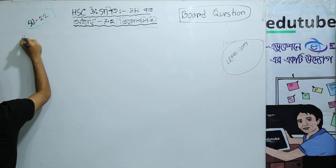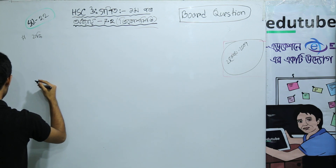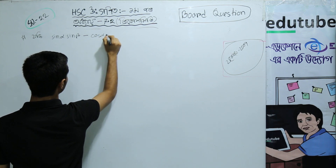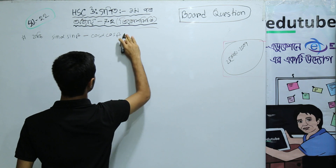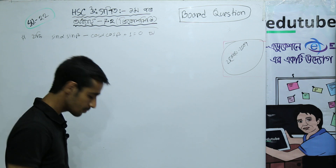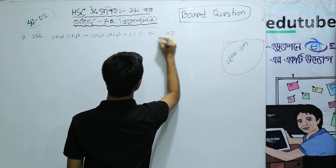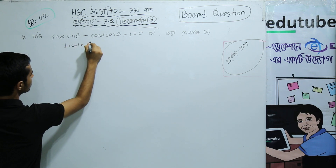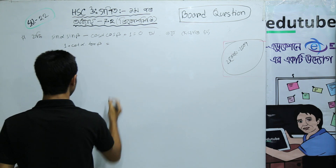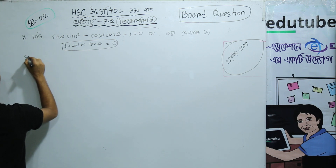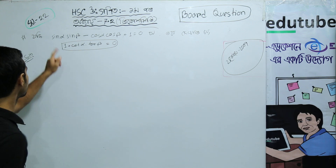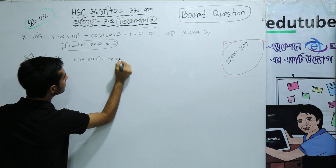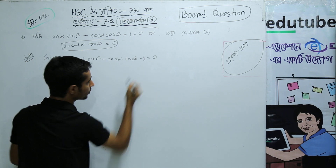Now the second number problem. Given: sin α·sin β minus cos α·cos β plus 1 equals 0. We need to prove that 1 plus cot α·tan β equals 0.